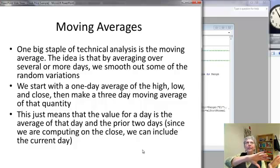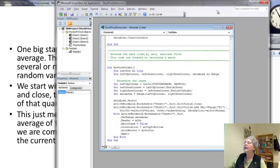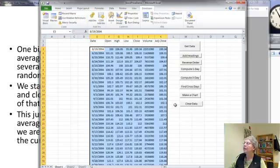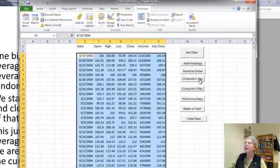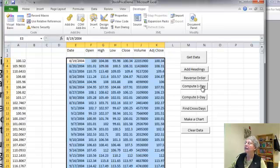So the idea is if you average over several days, you smooth out some of the variations. You get a good idea of how the price is trending for that particular time period. So what we're going to do is start with a single day average of the high, low, and close. And that's the first thing I compute. I'll do that here. So this is my one day moving average. I want to add my headings. There.